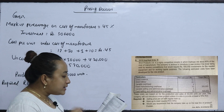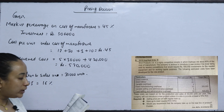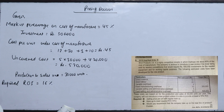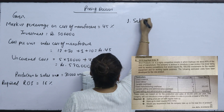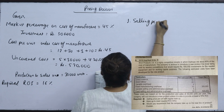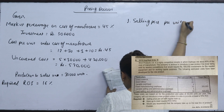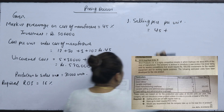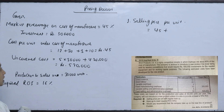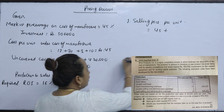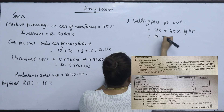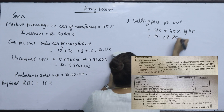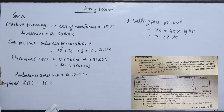Part one: Selling price per unit with regular markup. The manufacturing cost per unit is 45. Adding 45% markup to the cost per unit, we get the selling price. The selling price per unit comes to 65.25.